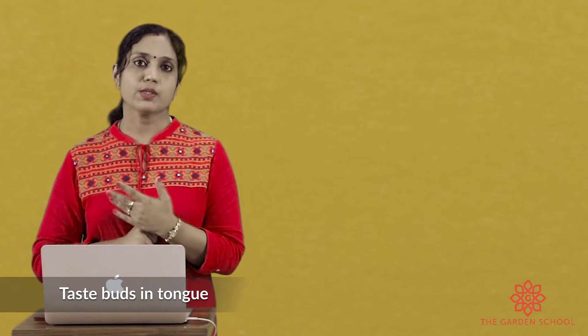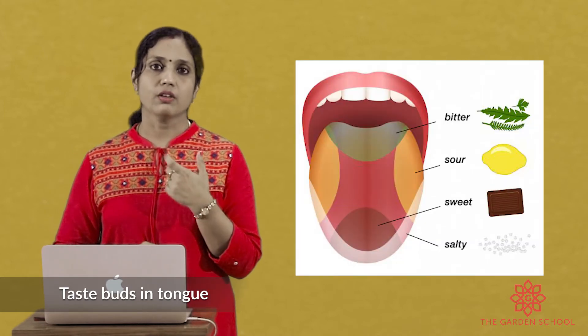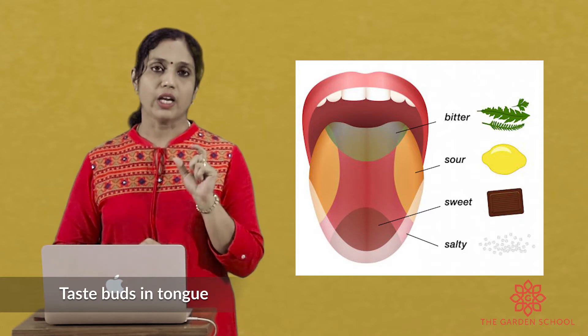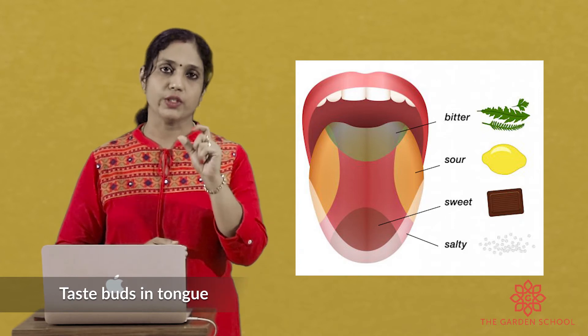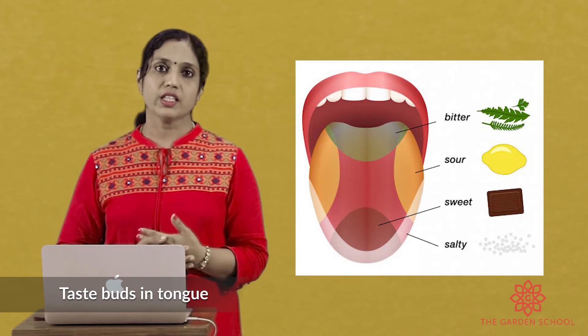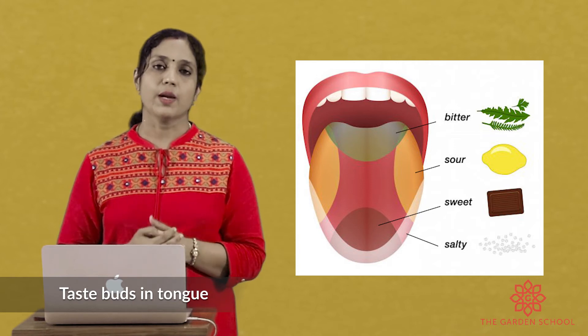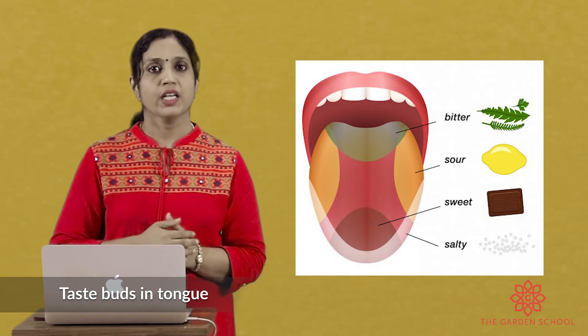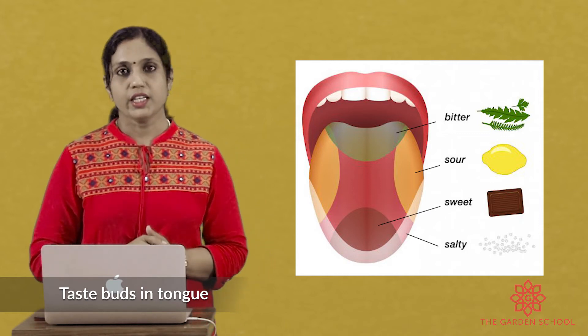Now let's look at the tongue. As I told you, there are different taste buds on the tongue that help us identify taste. For example, if you are eating a chocolate, what taste do you feel? You identify it as sweet. And if you are eating cheese, you feel it as salty. So which part of the tongue helps us identify each taste? Let's see.